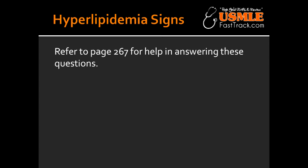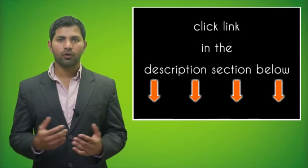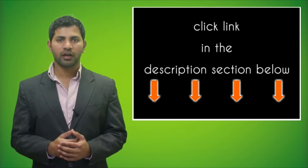What is corneal arcus? Corneal arcus is a lipid deposit in the cornea. What is arcus senilis? Arcus senilis is a white, gray, or blue opaque ring in the corneal margin.